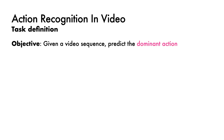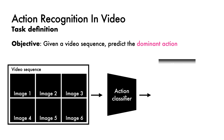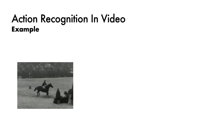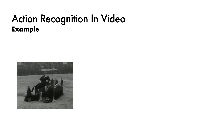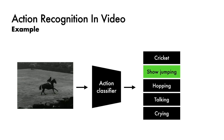Next we have action recognition, where the objective is to take in a video sequence and predict the dominant action. Given a set of frames from a video, an action classifier predicts a single class, exactly like an image classifier. For example, given the video on the left, an action classifier should predict show jumping as an appropriate action category.